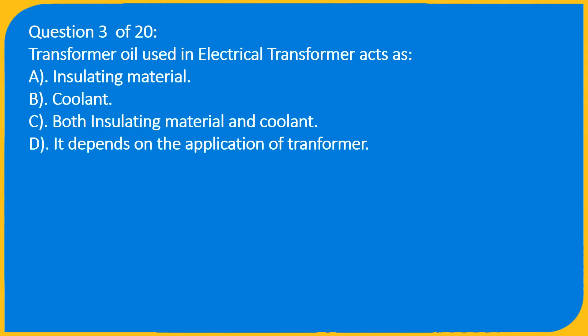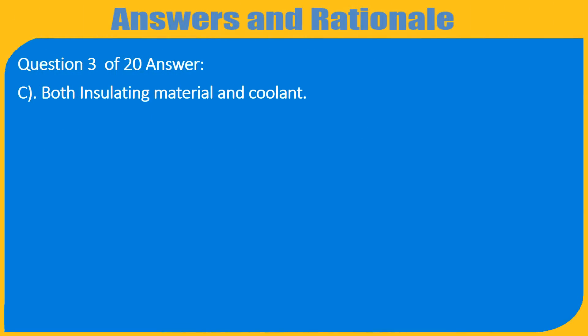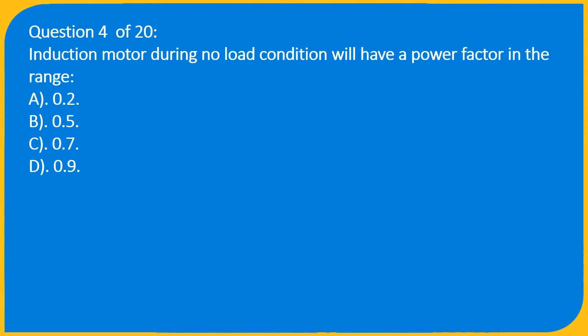Question 3 of 20: Transformer oil used in an electrical transformer acts as: A. Insulating material, B. Coolant, C. Both insulating material and coolant, D. It depends on the application of the transformer. Answer: C. Both insulating material and coolant.